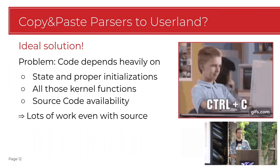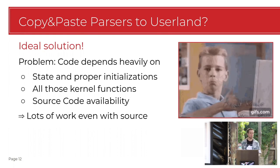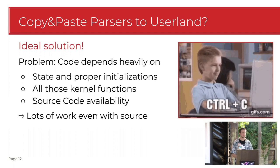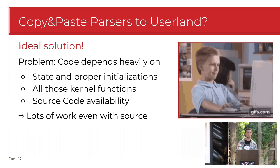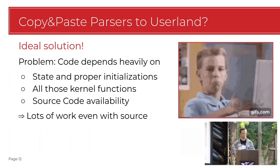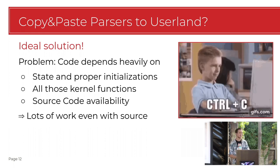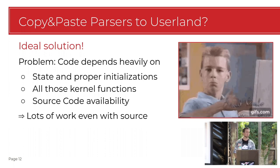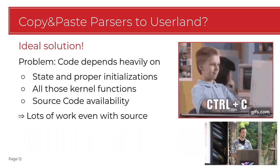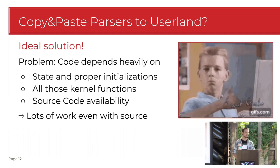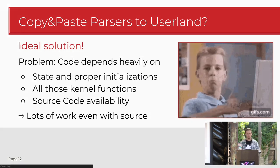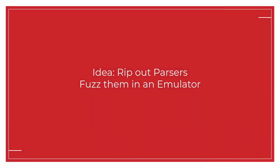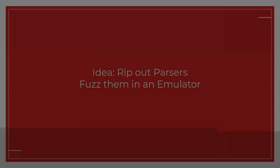But then we come back to the initial problem: it's really hard to set up the correct state for everything. The parser sometimes relies on weird globals in the kernel. You may not even be on Linux or somewhere you have the source, or you may have a weird blob from some vendor that is not open source. So what do you do? We emulate it - we take the kernel and fuzz it inside an emulator.